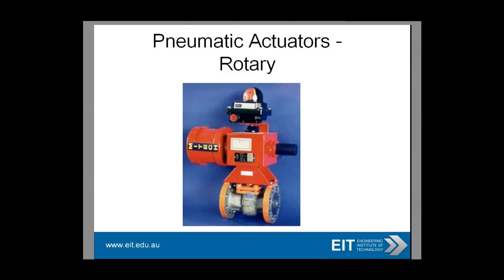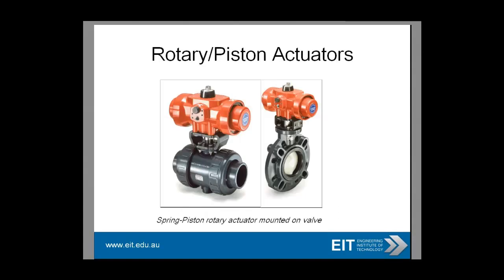You can have rotary actuators as single acting — air to open, spring to close, or air to close, spring to open — or as double acting. Double acting means you need to give it air to open it and air to close it. If you lose your air supply, it's going to fail in the last position it had. So your valve is going to dictate what the actuator will be. Just to clarify: the valve is the part marked in purple, and the actuator is the very large device at the top.